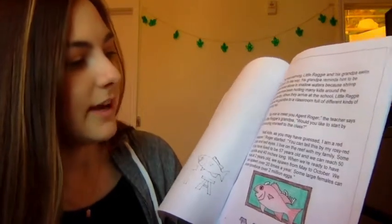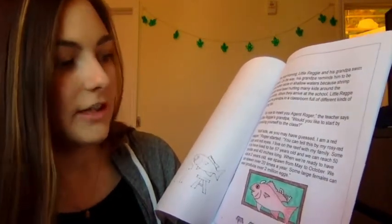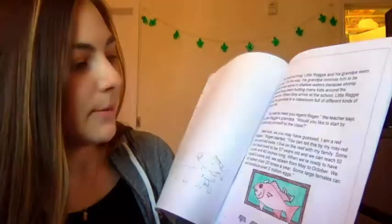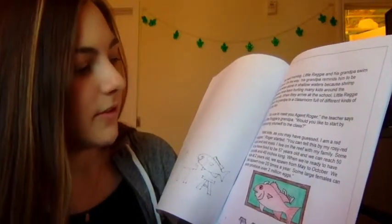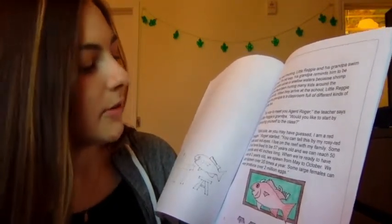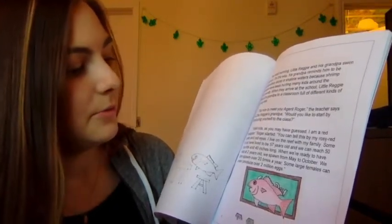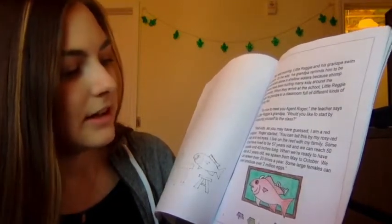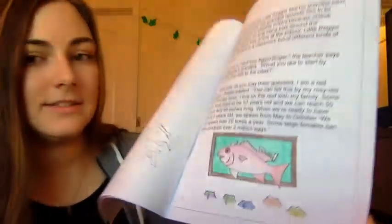Well, kids, as you may have guessed, I am a red snapper, Roger started. You can tell this by my rosy red color and red eyes. I live on the reef with my family. Some of us have lived to be 57 years old and we can reach 50 pounds and 40 inches long. When we're ready to have kids at two years old, we spawn from May to October. We can spawn over 20 times a year. Some large females can even produce over 2 million eggs.